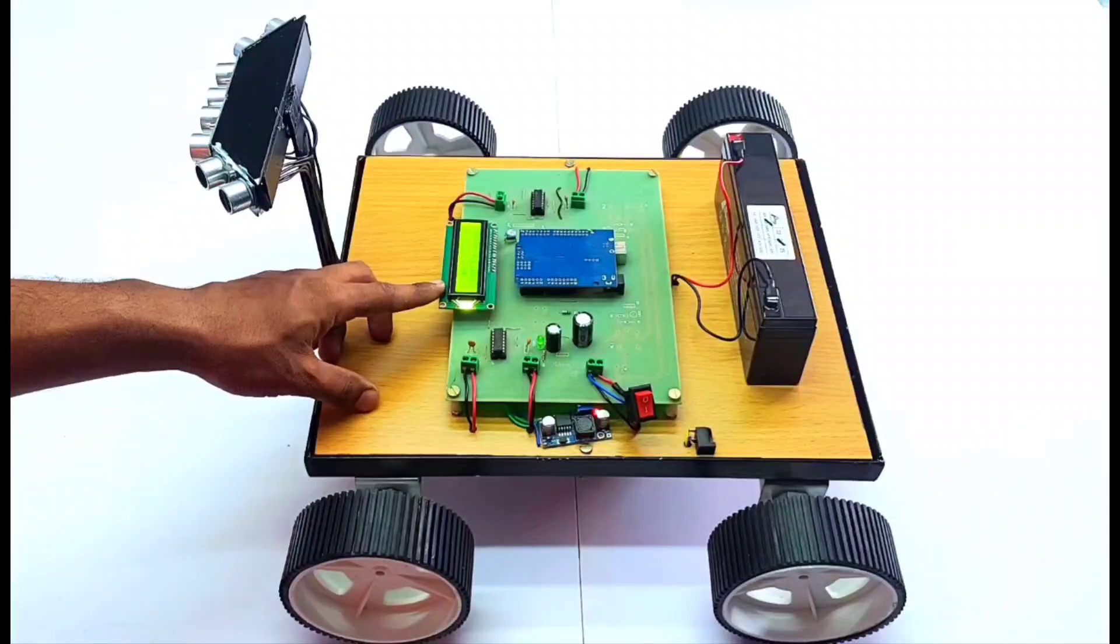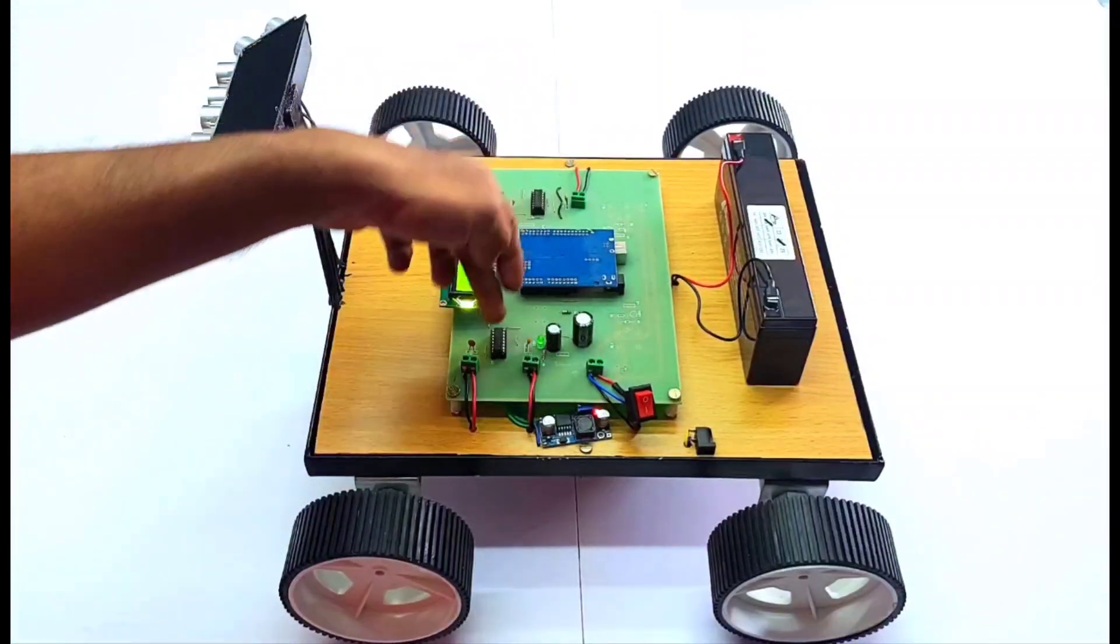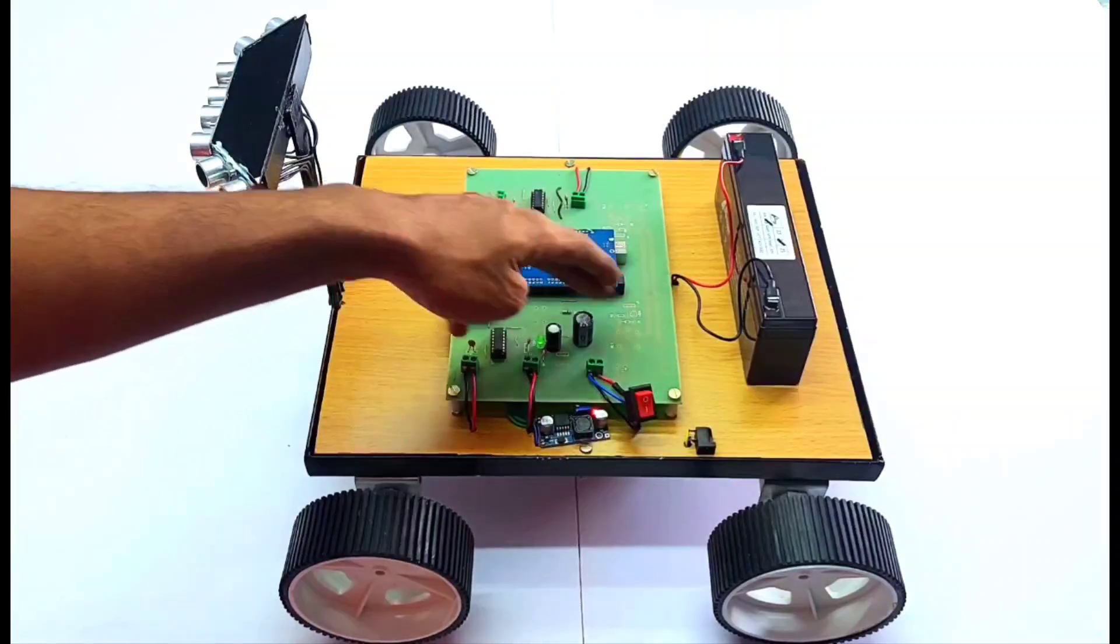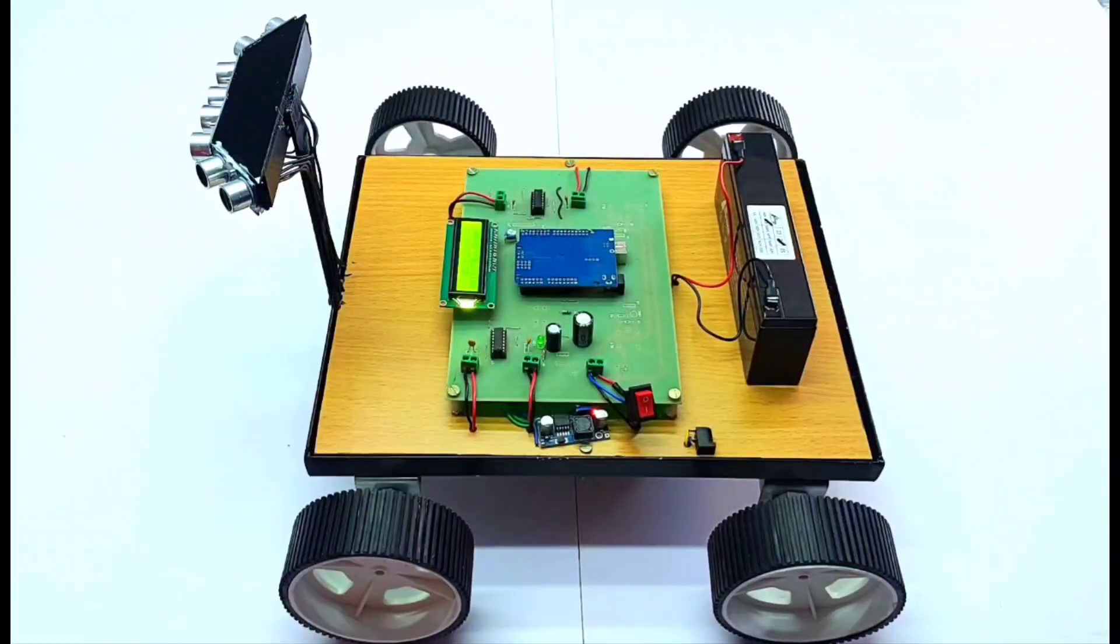This one is a liquid crystal display. These are the motor driver ICs, and here is the Arduino for the controlling system. This is a voltage regulatory circuitry. Here is the onboard power supply. So let's see the working of the project.